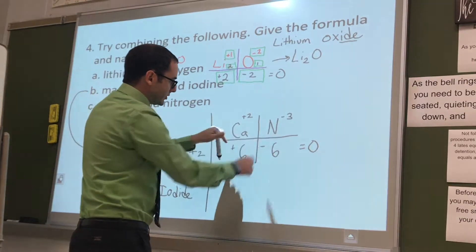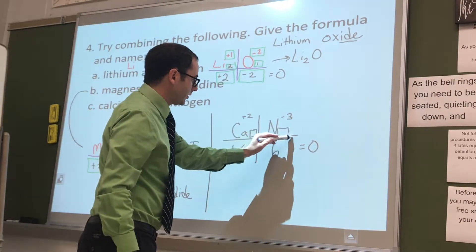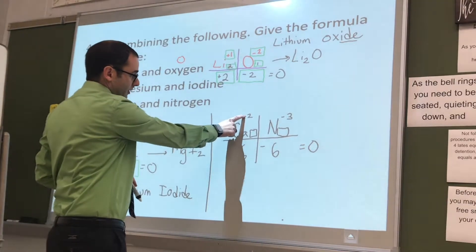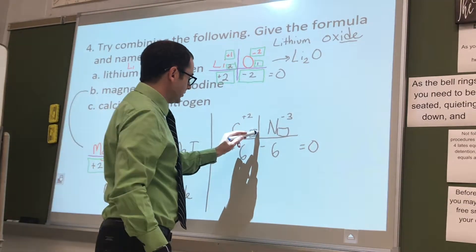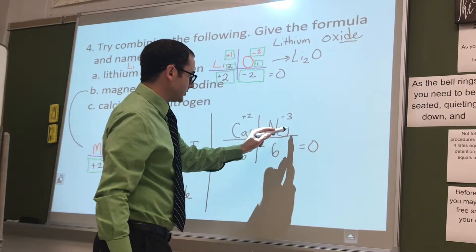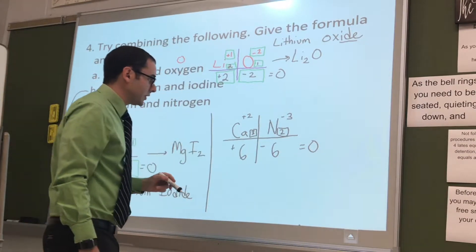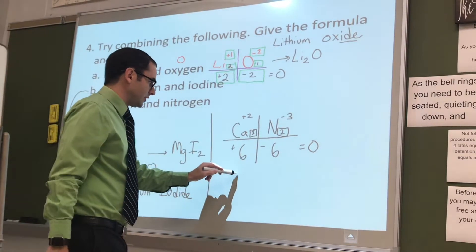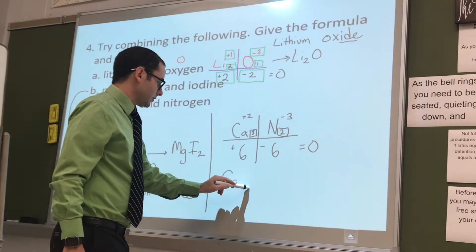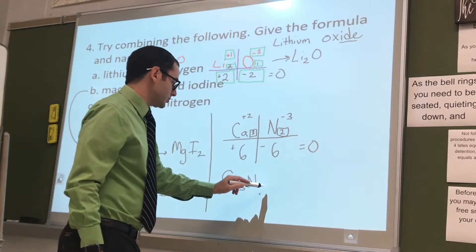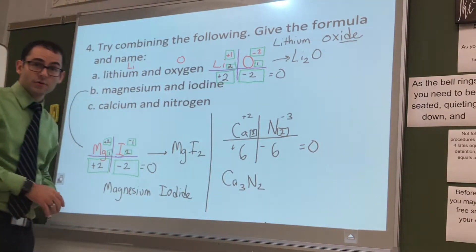And then, all you're doing is you're just filling in the numbers here that make it work. So, for this one, it's two times three gives you six, and this one, it's three times two gives you six, and then you get your answer there. You get calcium three, nitrogen two, alright?